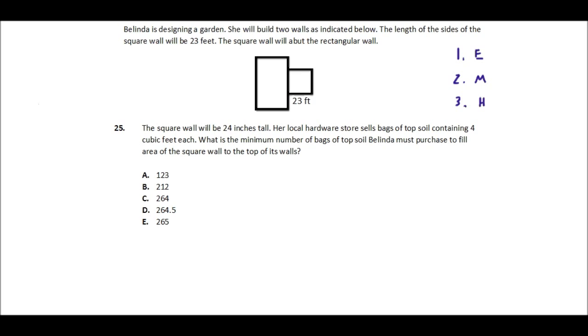Belinda is designing a garden. She will build two walls as indicated below. The length of the sides of the square wall will be 23 feet. The square wall will abut the rectangular wall. Number 25: the square wall will be 24 inches tall. Her local hardware store sells bags of topsoil containing four cubic feet each. What is the minimum number of bags of topsoil Belinda must purchase to fill the area of the square wall to the top of its walls?